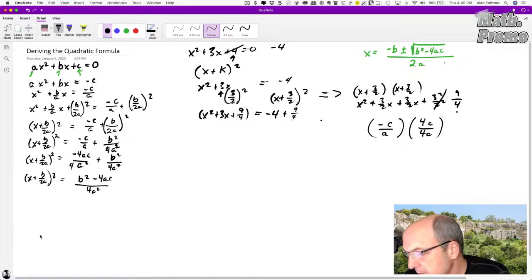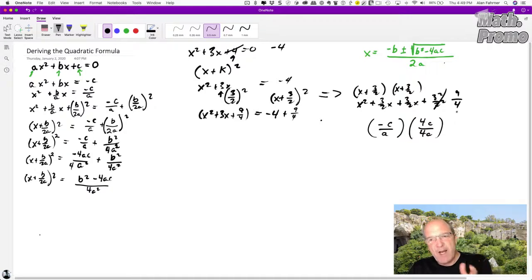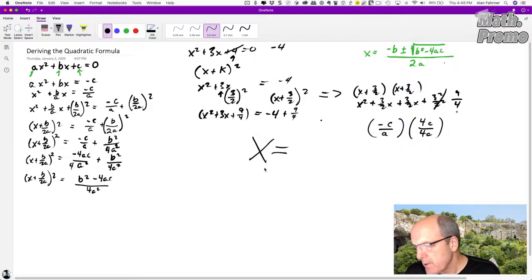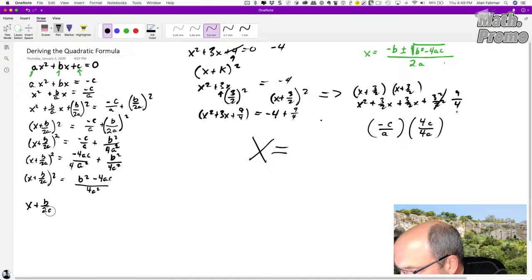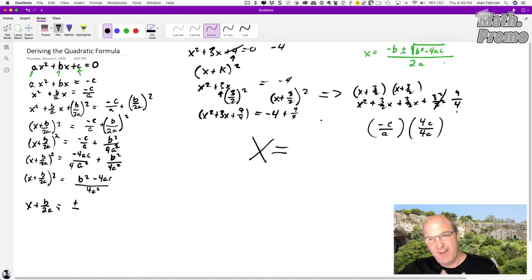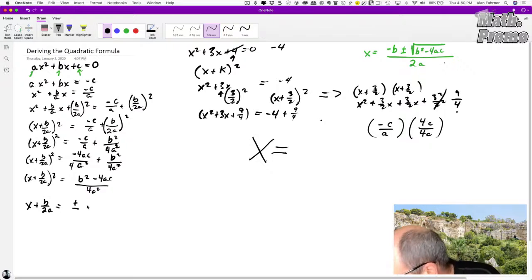We're almost there. Now, we're trying to get X alone. We want an X equals situation. As long as we've got a square running around here, it's not going to do much good. So let's go ahead and do the square root of both sides. That gives us X plus B over 2A equals plus or minus the square root of B squared minus 4AC over 4A squared.